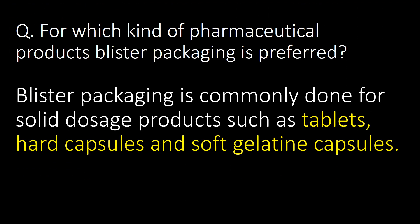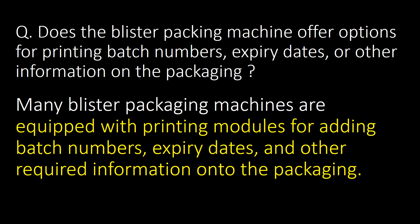For which kind of pharmaceutical products is blister packaging preferred? Blister packaging is commonly done for solid dosage products such as tablets, hard capsules, and soft gelatin capsules. Many blister packaging machines are also equipped with printing modules for adding batch numbers, expiry dates, and other required information onto the packaging.